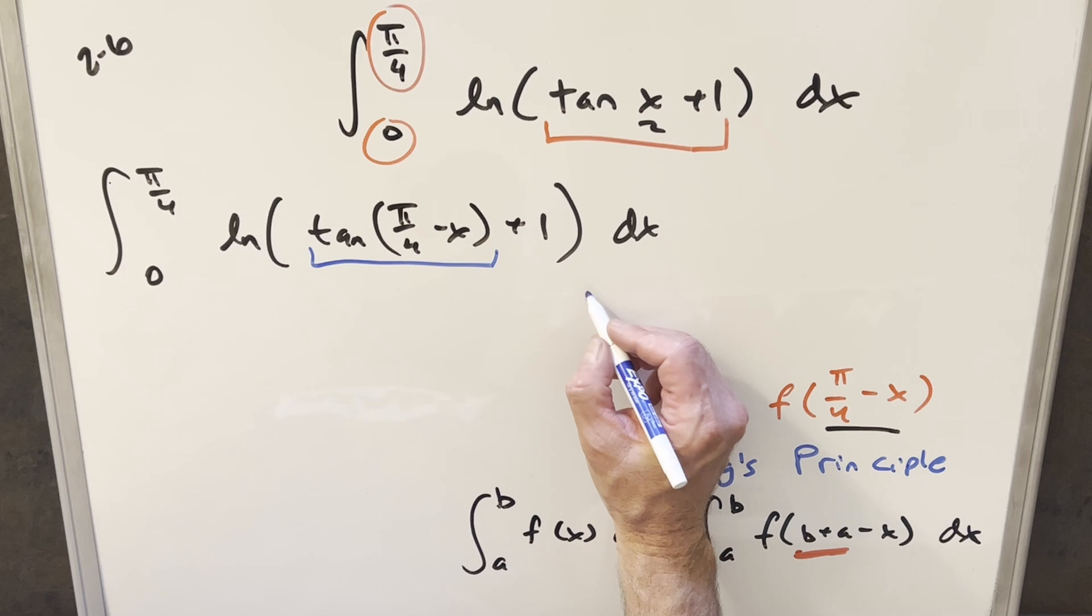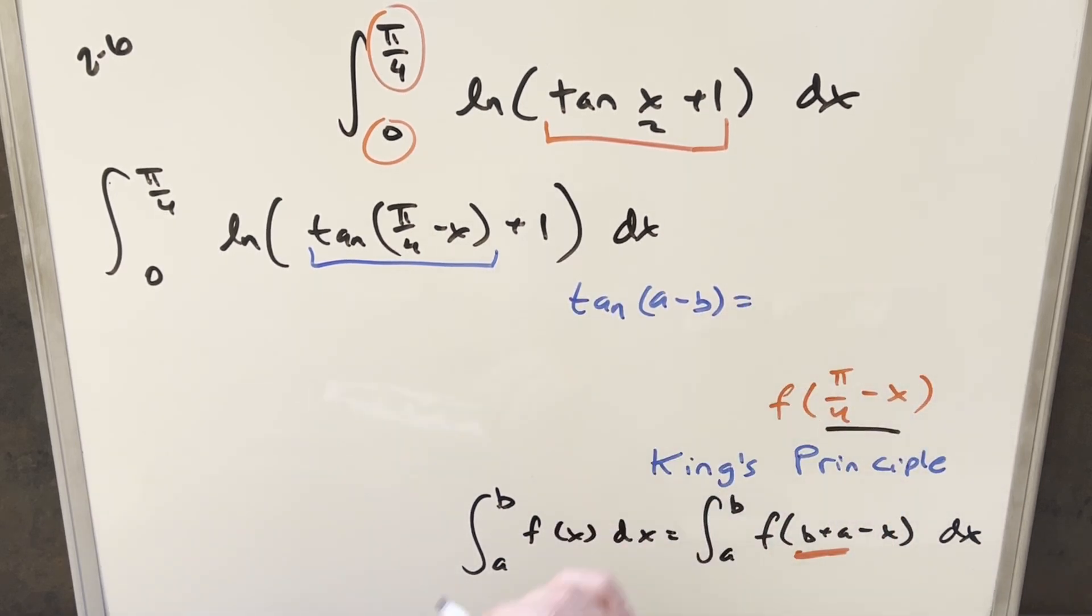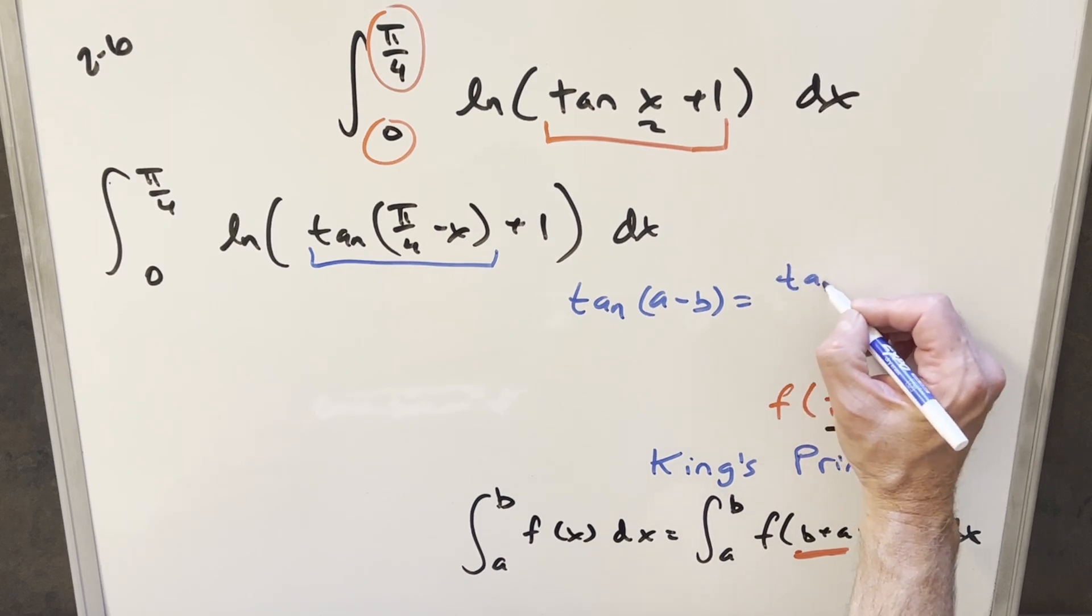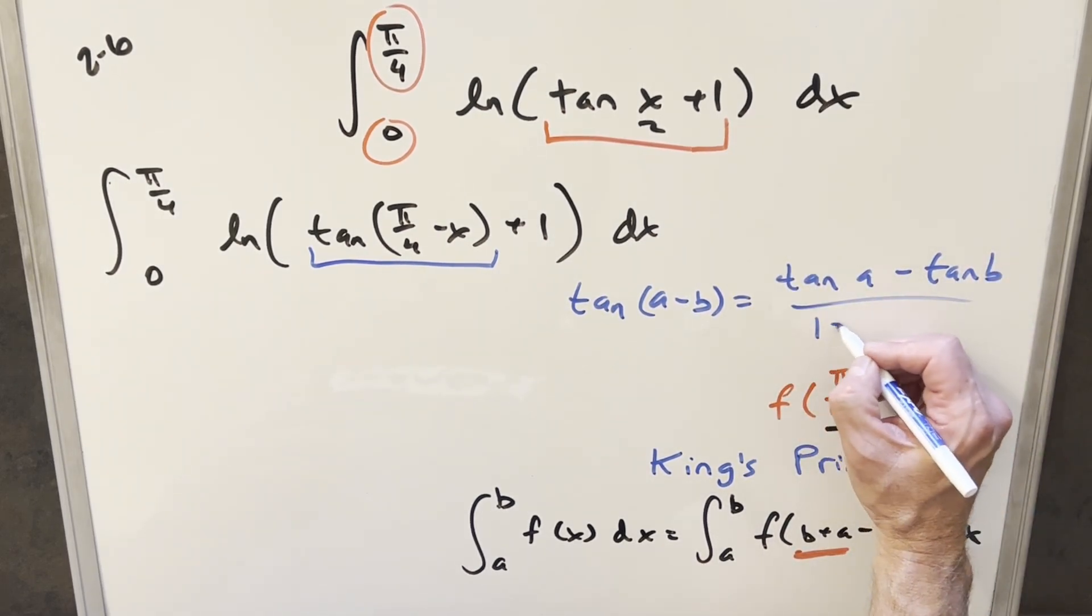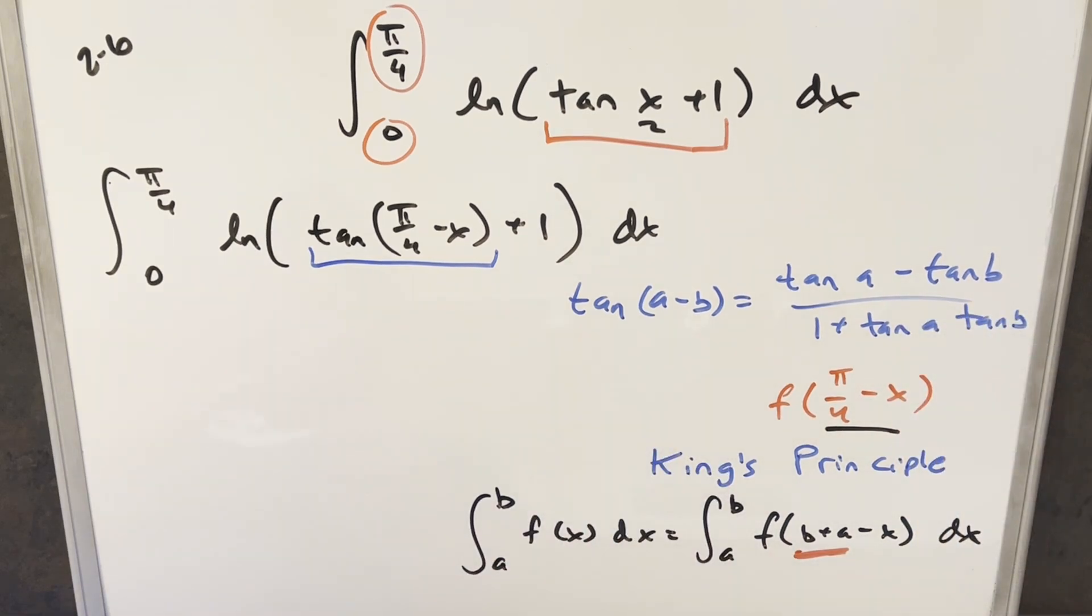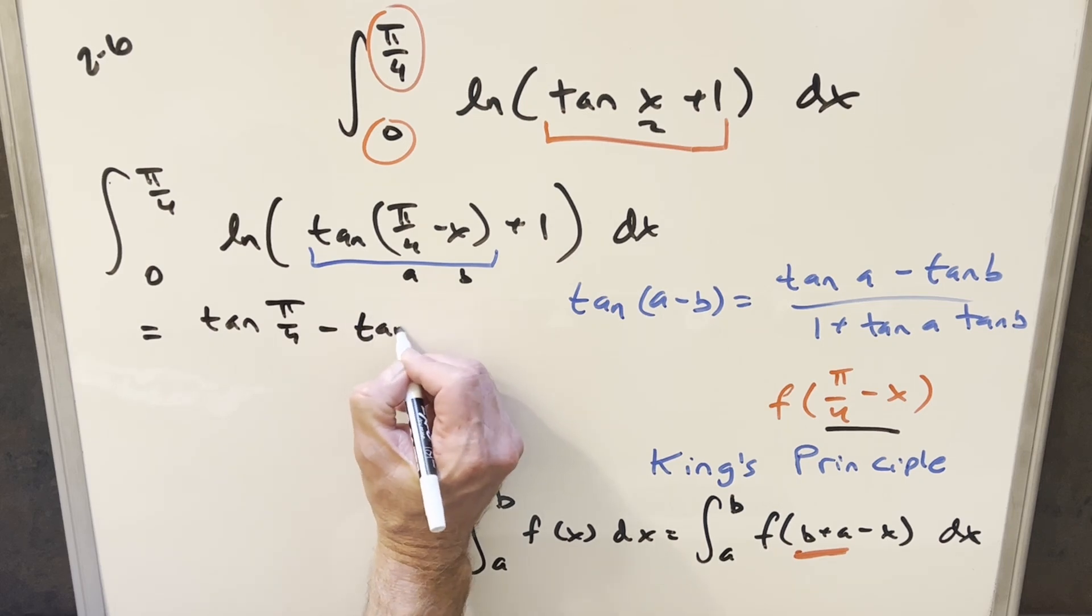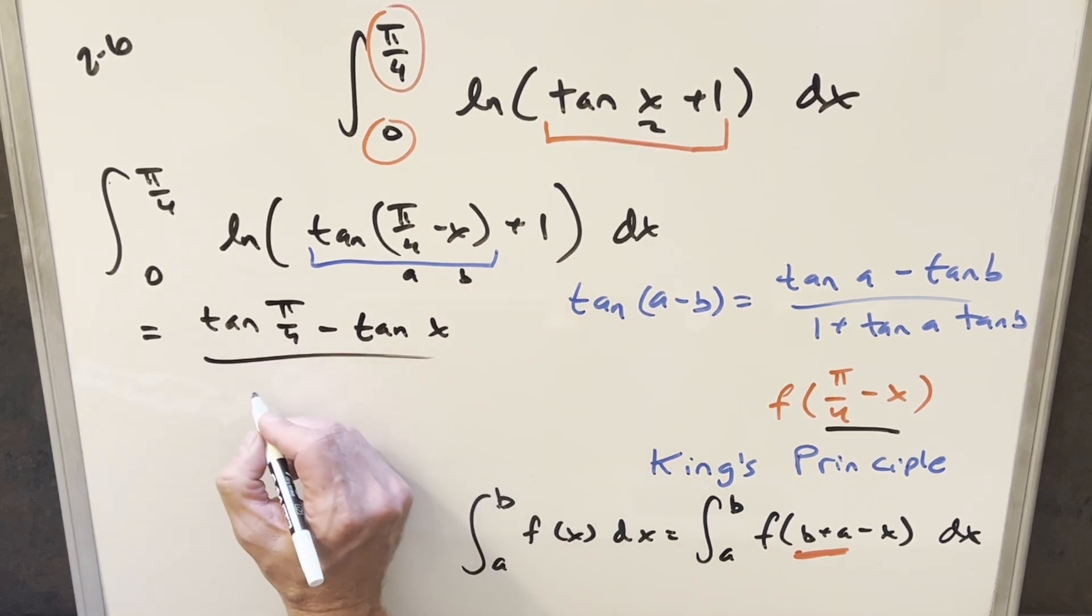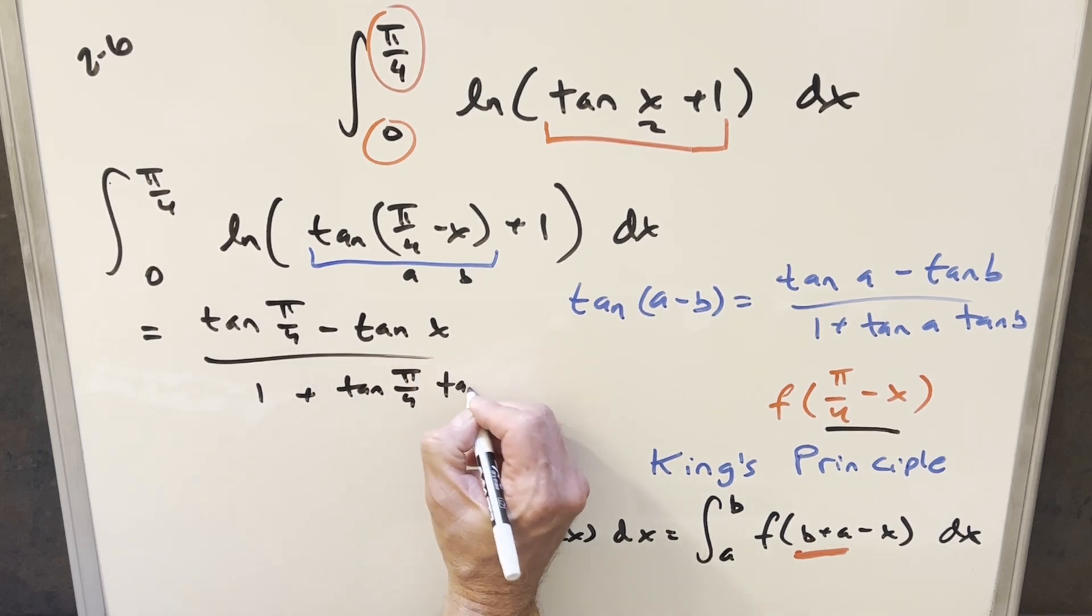And then from here, I just want to focus on this piece. And what we can do is use the angle difference formula for tangent on this. If we have something like tangent of a minus b, we can rewrite this as tan a minus tan b over one plus tan a times tan b. So with this, let's see what's going to happen. We're going to transform this thing. It's going to become tangent of, this is our a value and this is our b value right here. So we'll have tangent of pi over four minus tangent of x over one plus tangent pi over four times tangent of x.